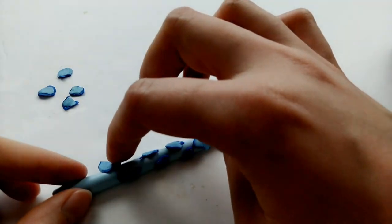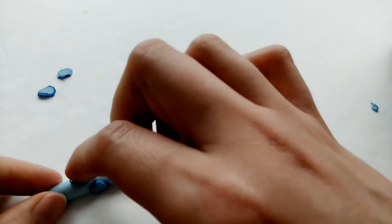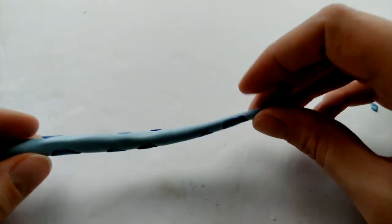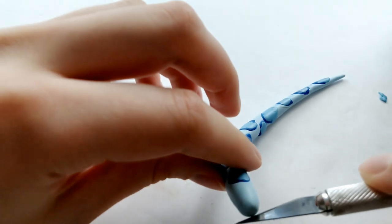So once you're done, just stick it all down the length of the snake, focusing it on the top. And once you have it on, just roll it out to connect everything and make it flush with the snake.